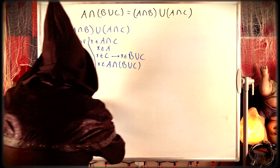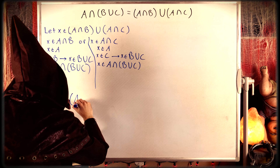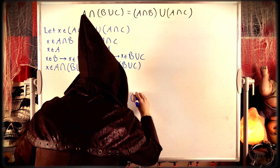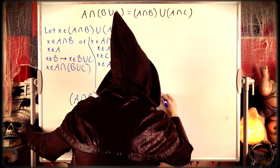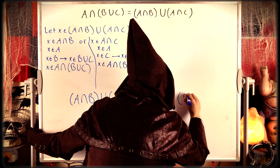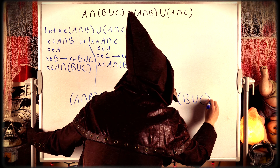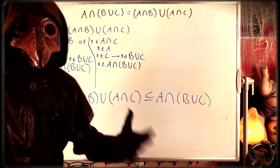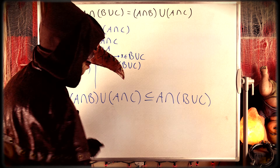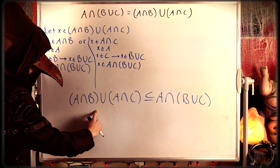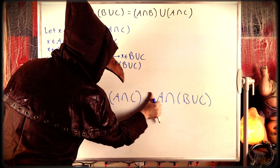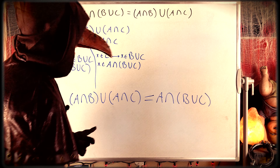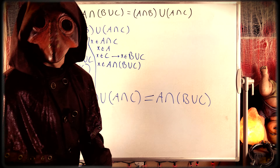We've just shown that A intersect B union A intersect C is a subset of A intersect B union C. In the previous step we showed that A intersect B union C is a subset of A intersect B union A intersect C. Thus, since they are both subsets of each other, A intersect B union A intersect C equals A intersect B union C.